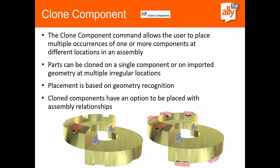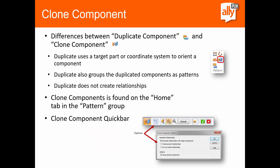My favorite command added in the assembly environment in ST10 is the clone component command. This allows you to place multiple occurrences of one or more components — whether a part or sub-assembly — into different locations in your assembly. Parts can be cloned on a single component or on imported geometry at multiple or regular locations. Placement is based on geometry recognition: we pick up things like holes or cutouts and use that to clone to other locations. The nice thing is you have the option to place this with assembly relationships, which is different from the duplicate command. The duplicate component command groups duplicates as a pattern and does not create relationships.